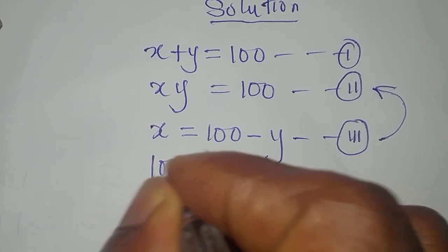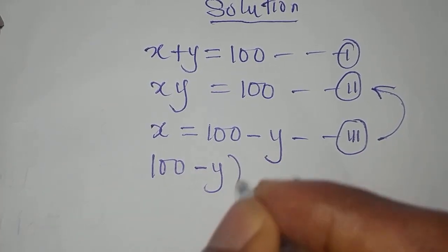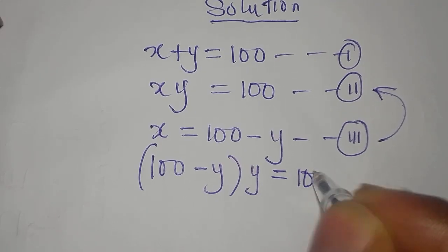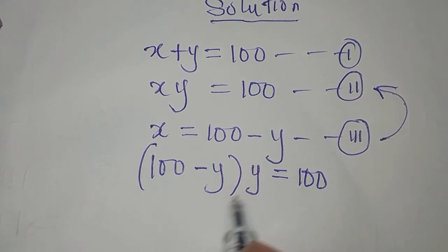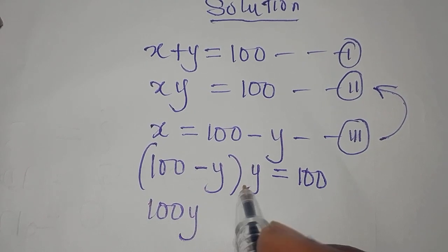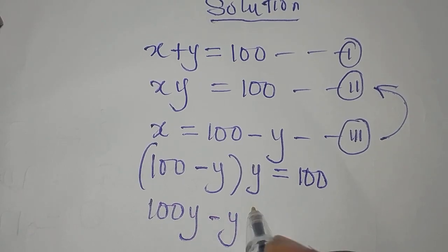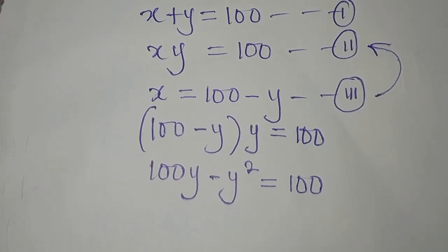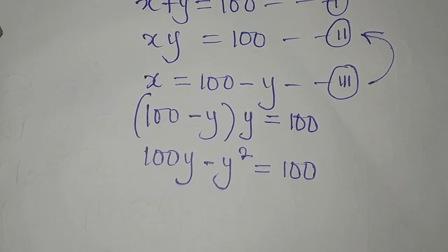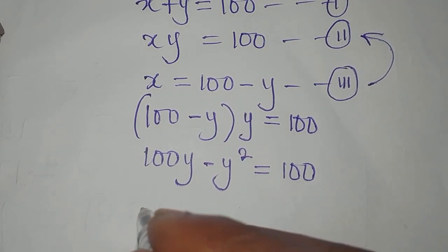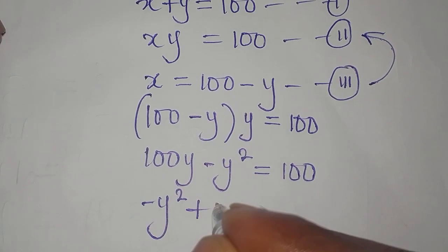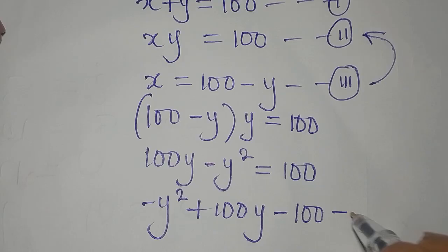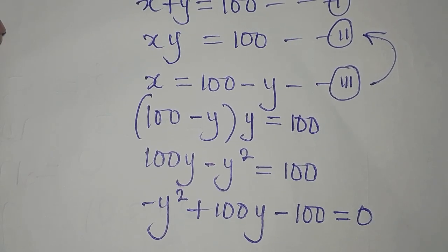Equation 2 is xy equals 100. In place of x, I'll write 100 minus y, then this y in equation 2 will be outside and it's equal to 100. So 100 times y is 100y, minus y times y is minus y squared, and this is equal to 100. Let's write the term with the highest power first: minus y squared plus 100y, bringing 100 to the left gives minus 100, equal to 0.